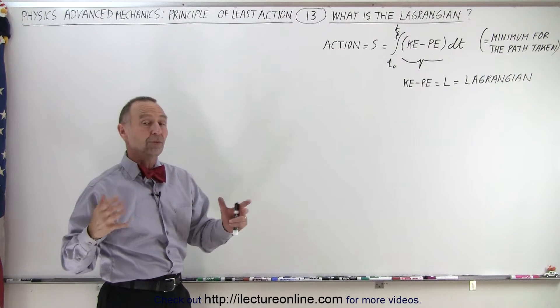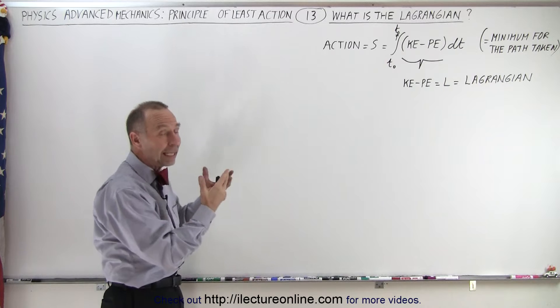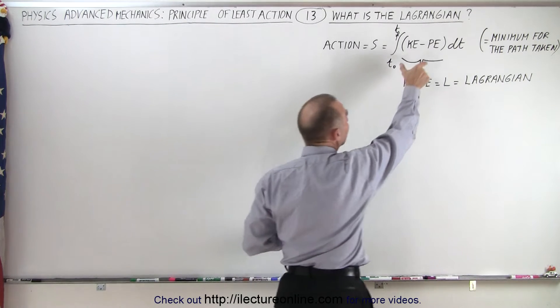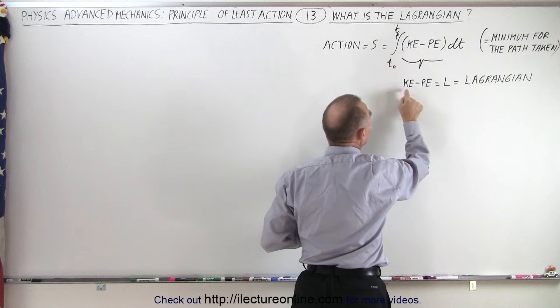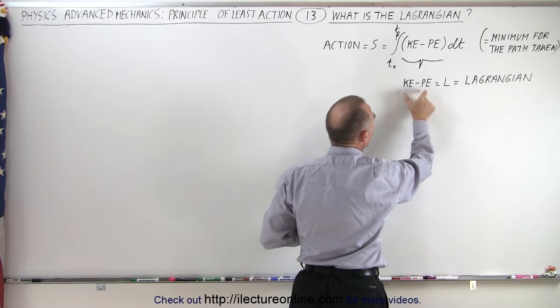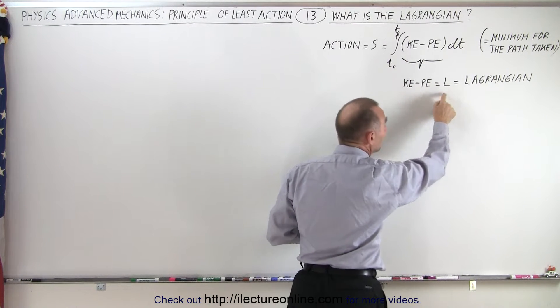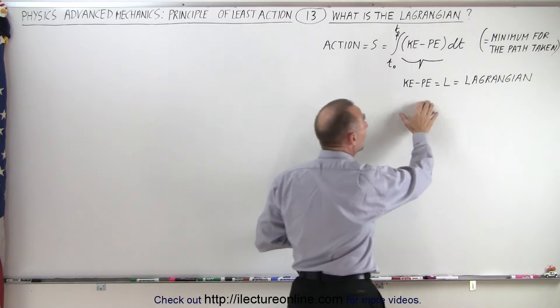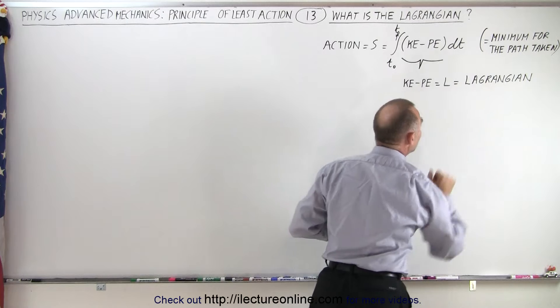We still need to prove that, but at least we've shown you some examples that seem to indicate that that's indeed true. So now let's take what's inside the integral, the difference between the kinetic energy and the potential energy, and let's define that as L. Matter of fact, we didn't define it that way. That was defined already a long time ago, and that's now called the Lagrangian.